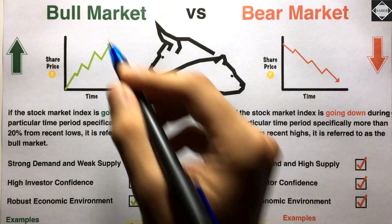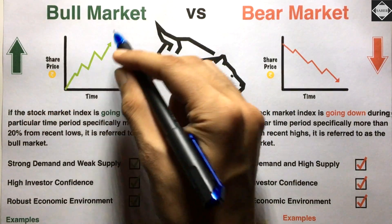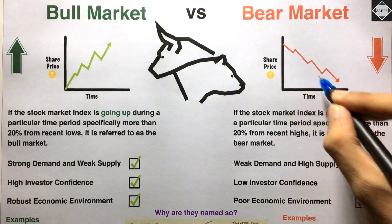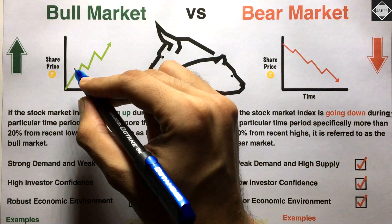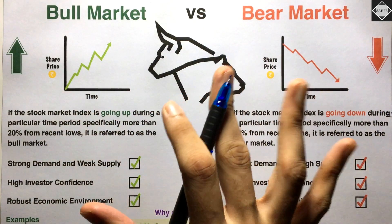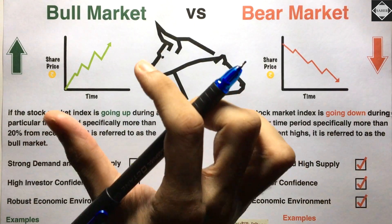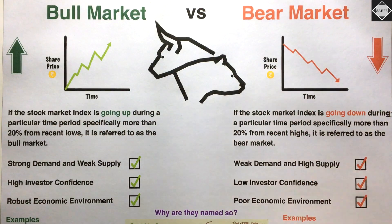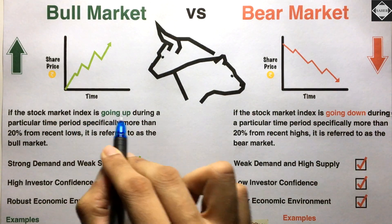Bull market is the situation when the stock market is doing really well — share prices are continuously going up. Bear market is the opposite situation where share prices are continuously falling over a sustained period of time. It's not like if the share price has gone up today you can immediately say it's a bull market. It has to be over a sustained period of time — few weeks, months, or years.